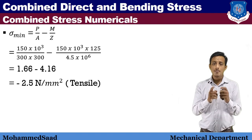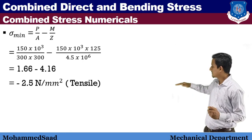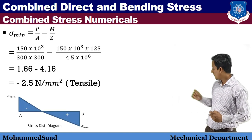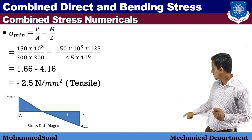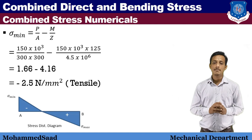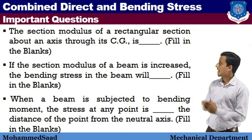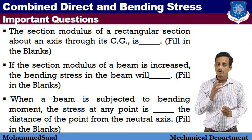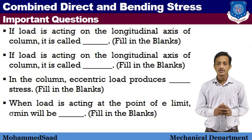The stress diagram shows sigma max is positive (compressive) and sigma minimum is negative (tensile). In today's session we covered combined direct and bending stress with an important numerical example. For MCQ exam practice, the link is provided in the description. Thank you for watching.